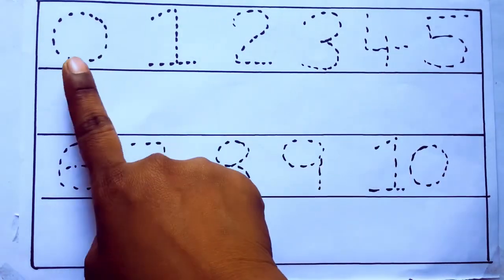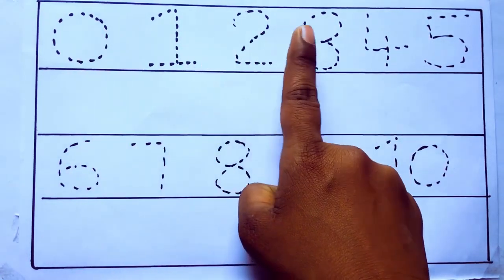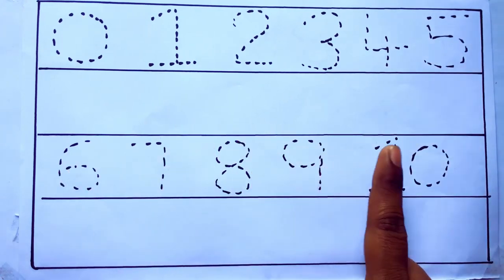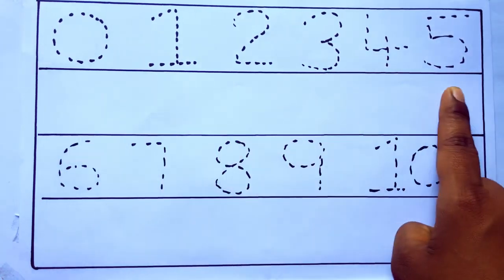0 to 10: 0, 1, 2, 3, 4, 5, 6, 7, 8, 9, 10, and rewriting the numbers.